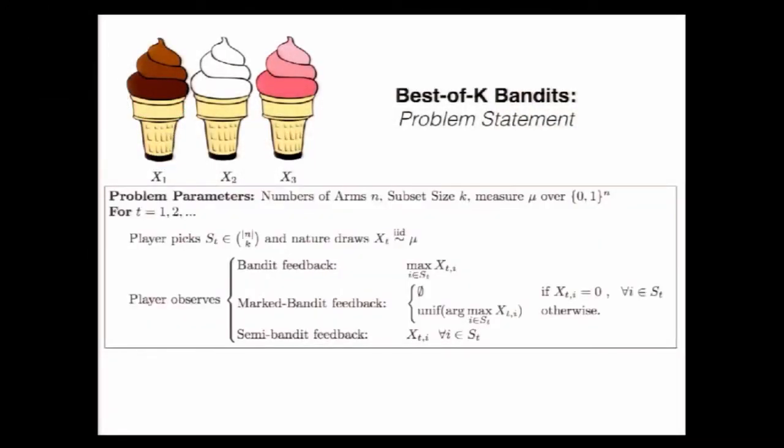Formally, I'm going to have N simple arms, a subset of size K, and I'm going to have a binary measure over all the arms. This measure can be correlated, which is going to introduce some difficulties. And at each round, I'm going to pick a subset of K ice cream flavors to put in my store.